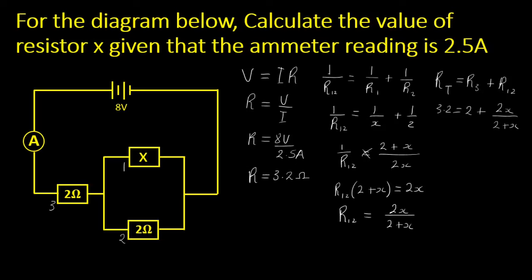This will become 3.2 minus 2 equals 2x/(2 + x). So on the left-hand side, if we subtract the two, we simply get 1.2 being equals to 2x divided by (2 + x).